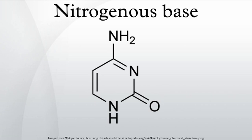These nitrogenous bases are adenine, uracil, guanine, thymine, and cytosine. These nitrogenous bases hydrogen bond between opposing DNA strands to form the rungs of the twisted ladder, or double helix of DNA. Adenine is always paired with thymine, and guanine is always paired with cytosine. These are known as base pairs.